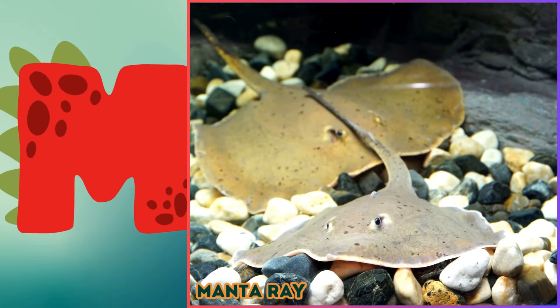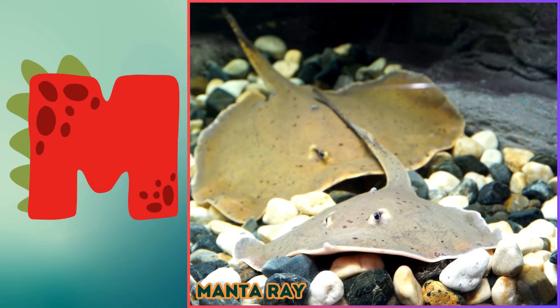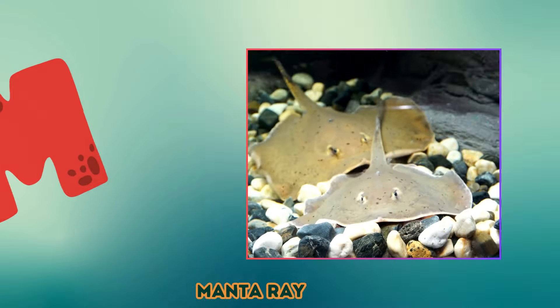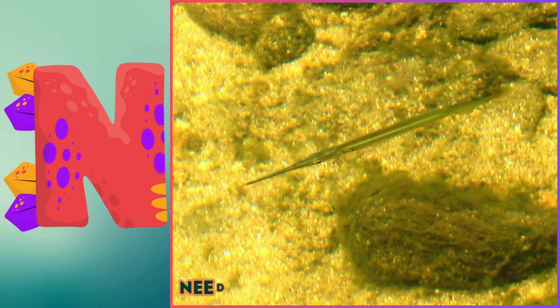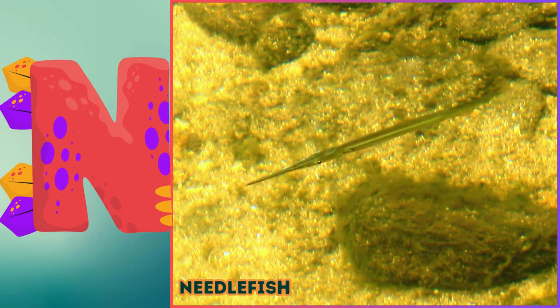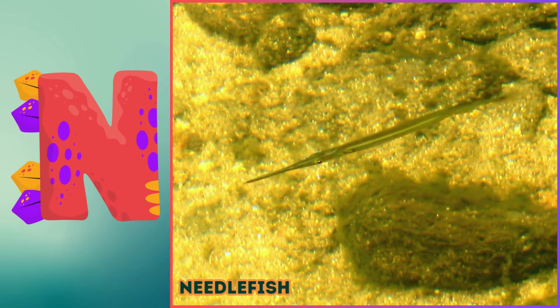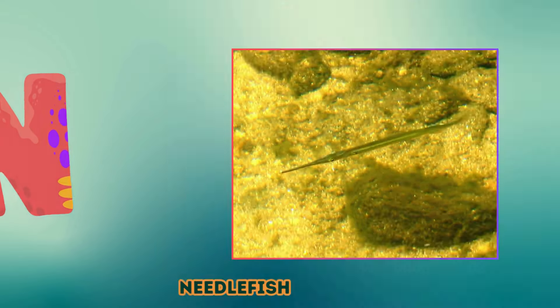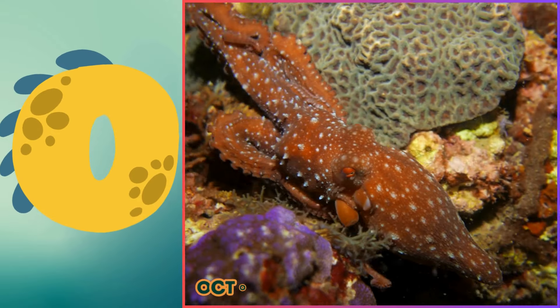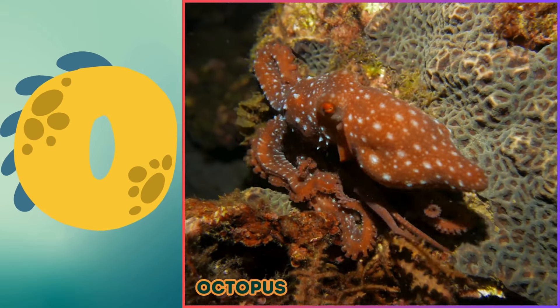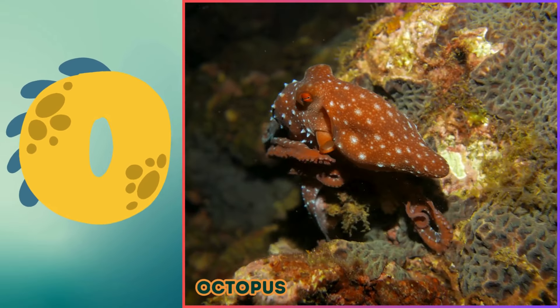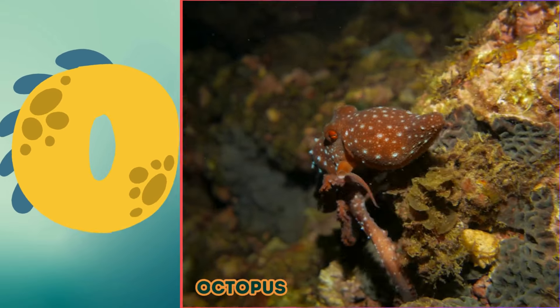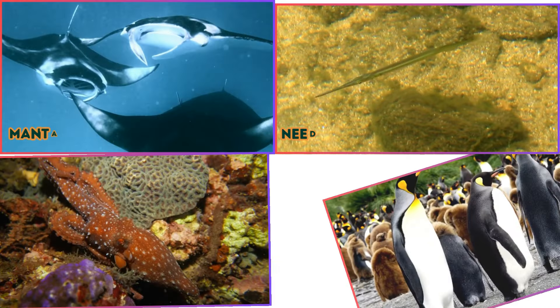I is for Indian glass fish, Indian glass fish. J is for jellyfish, jet jet jellyfish. K is for killer whale, cat cat killer whale. L is for lionfish, la la lionfish.